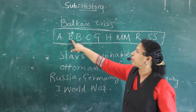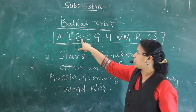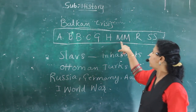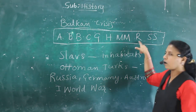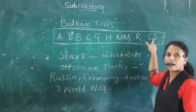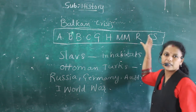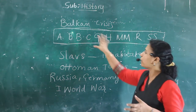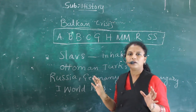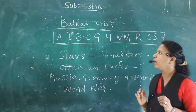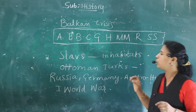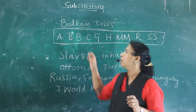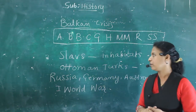So the full list is: Albania, Bulgaria, Bosnia, Croatia, Greece, Herzegovina, Montenegro, Macedonia, Romania, Slovenia, and Serbia. This is a shortform method — AB squared, C, G, H, N squared, R, S squared — to help you study and remember these states of Europe.